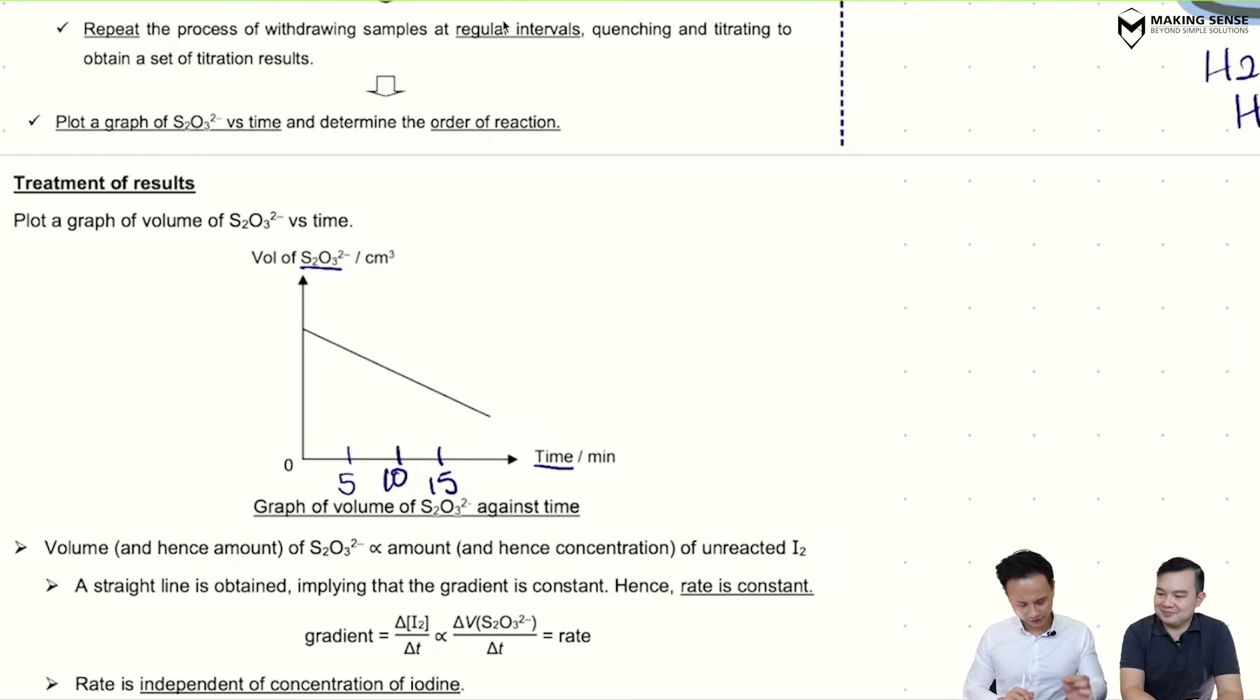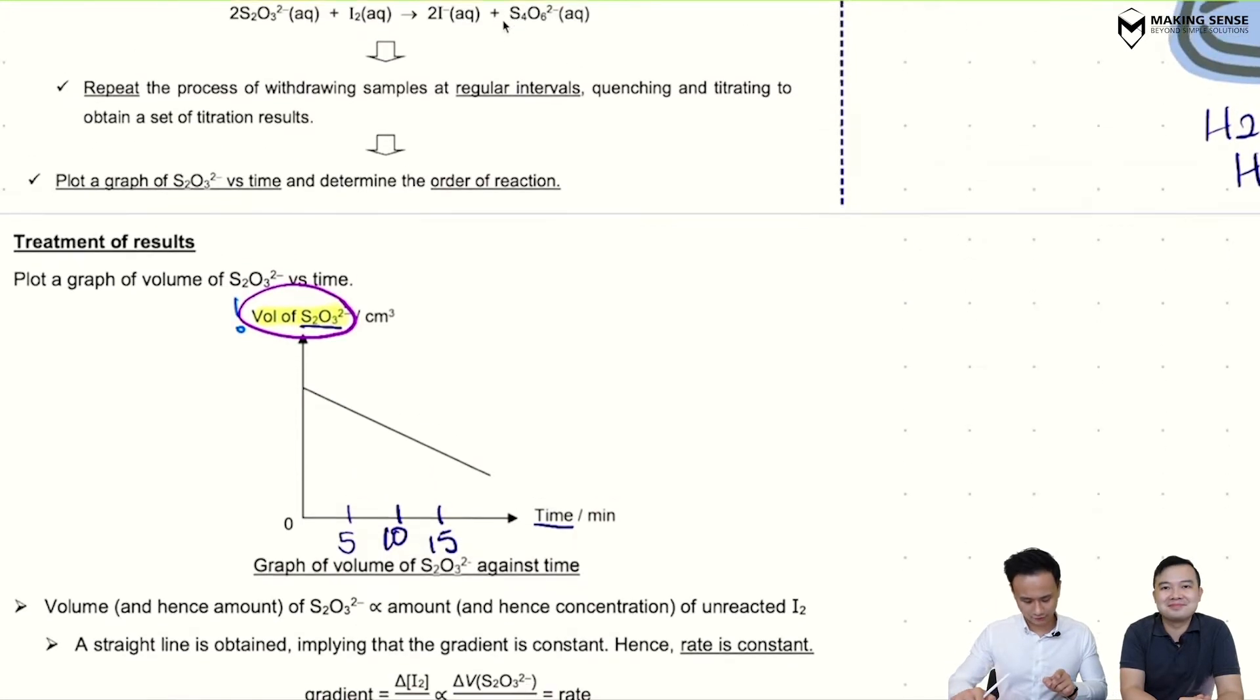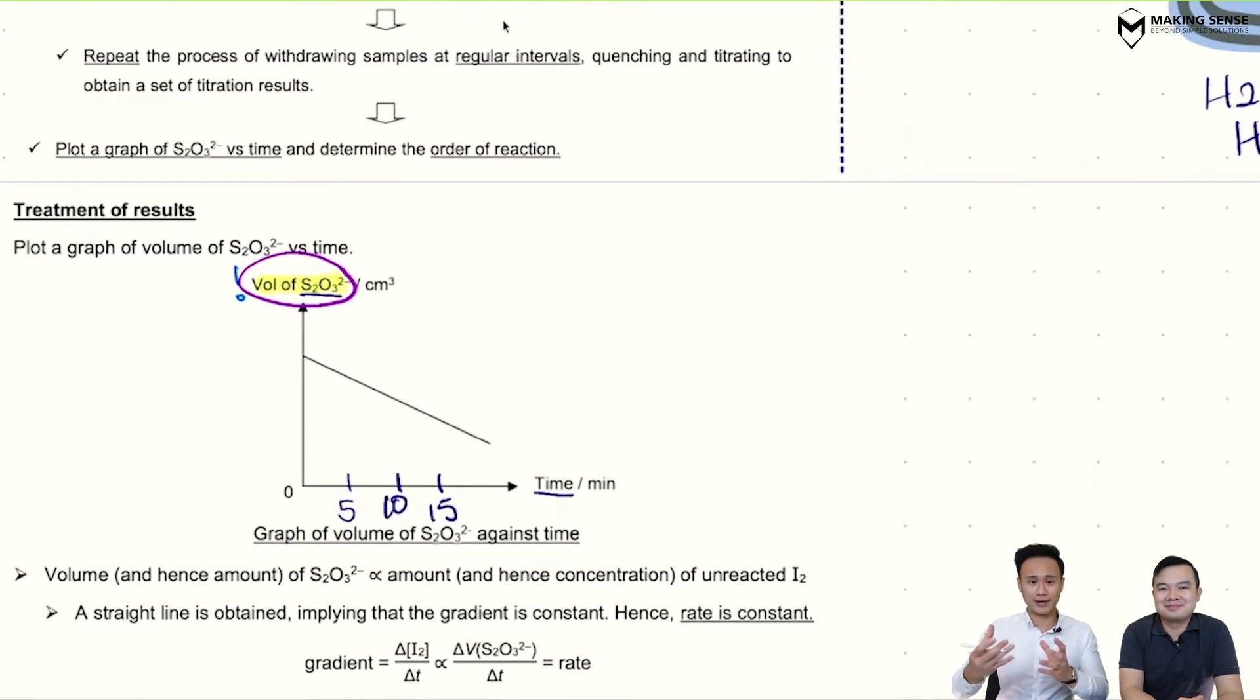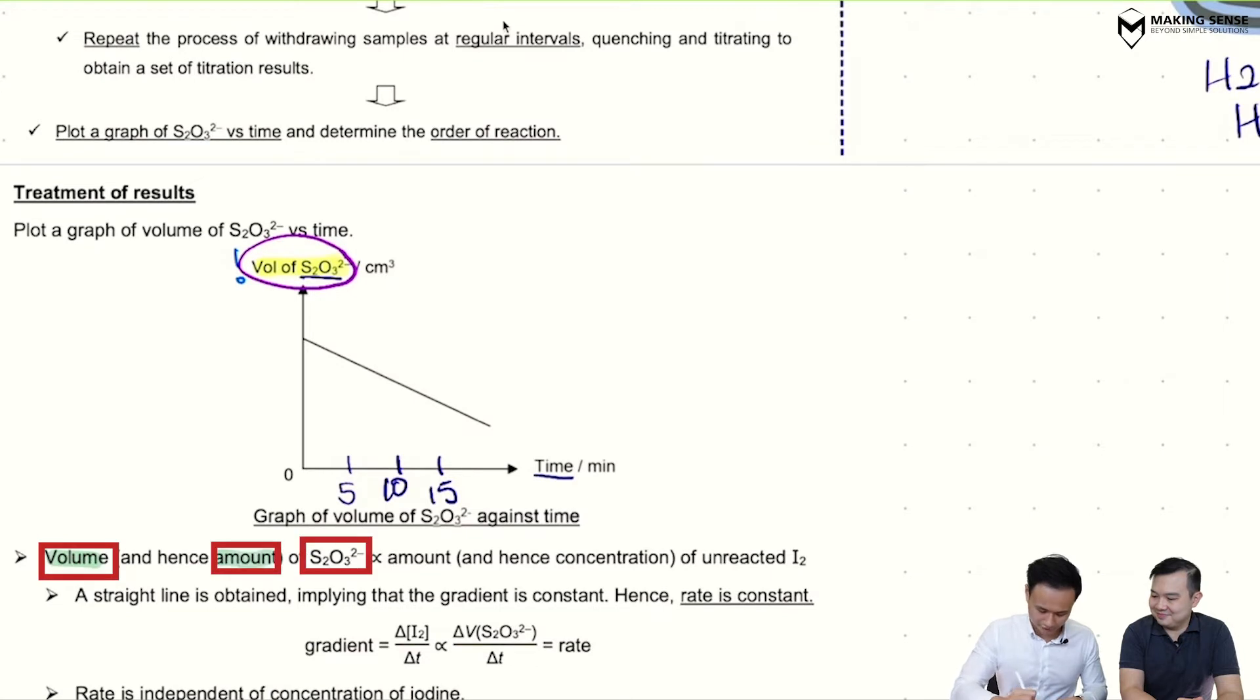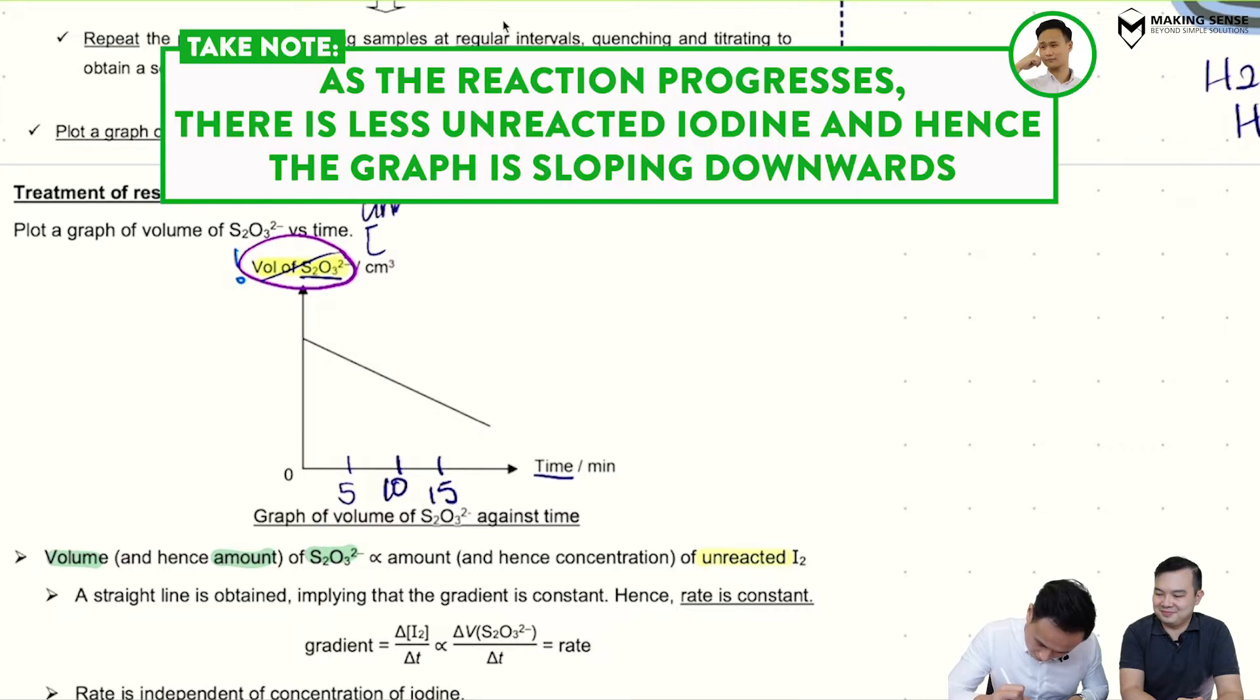But Mr. Leung, you can see something's a bit awkward here. So by right, originally when we talk about volume in a graph, it should be the concentration of the reactants. But this one, it seems to be talking about a different reaction altogether. We are finding out the volume of thiosulfate now. So how does that relate back? But we know this, because volume of thiosulfate, the more unreacted iodine you have, then the more volume of thiosulfate you need for titration. So which means you can see that the kind of proportional, the volume and hence the amount of thiosulfate is proportional to the amount of unreacted iodine. So plotting this graph is almost as good as plotting concentration of unreacted iodine.